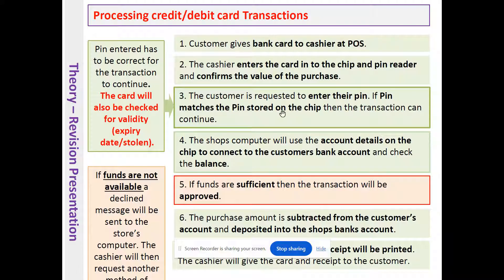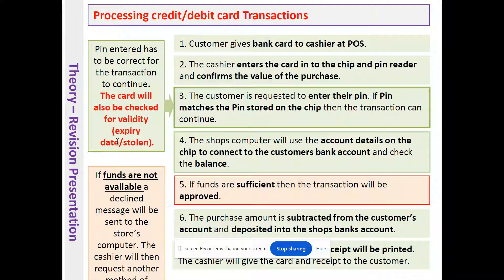If the PIN matches the PIN stored on the chip, then the transaction can continue. If you enter the incorrect PIN using chip-and-pin, you may be prompted to enter it again. If you enter the PIN wrong too many times, your transaction may be declined. The card will also be checked to see if it's still valid — not expired, not blocked, and not stolen. If the card is valid and the PIN entered is correct, we can continue.